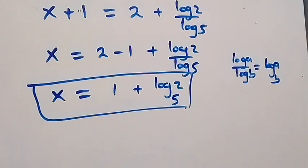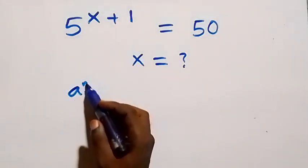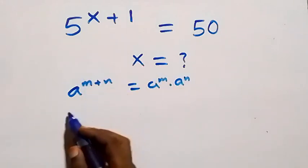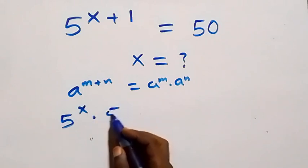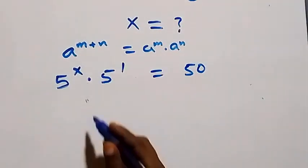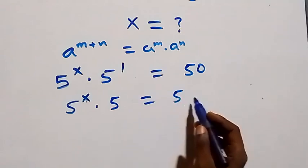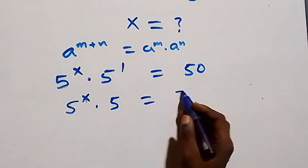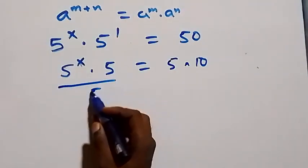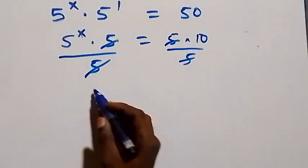Alternatively, we can solve this using the law of indices. The expression a raised to power m plus n can be written as a raised to power m times a raised to power n. So 5 raised to x plus one becomes 5 raised to power x times 5 raised to power 1 equals 50. Dividing both sides by 5, we have 5 raised to power x equals 10.